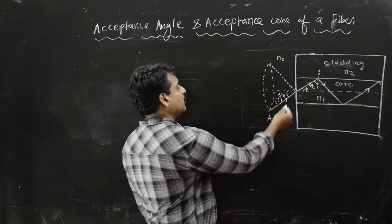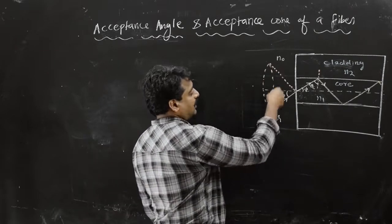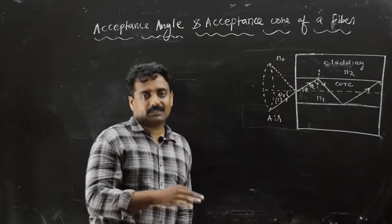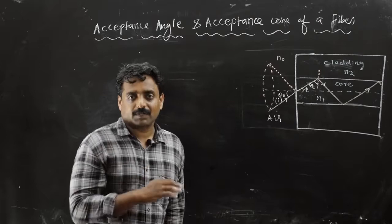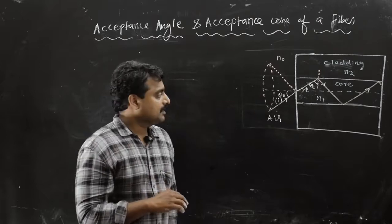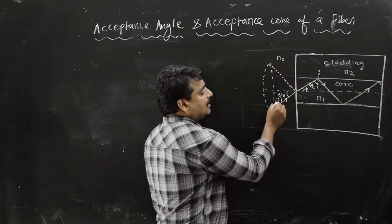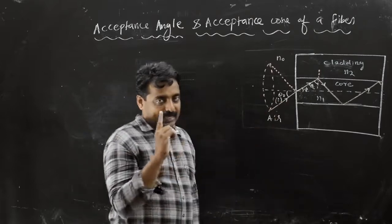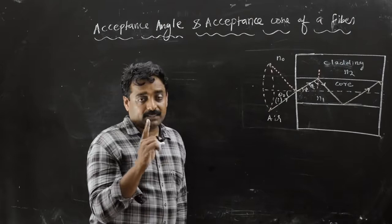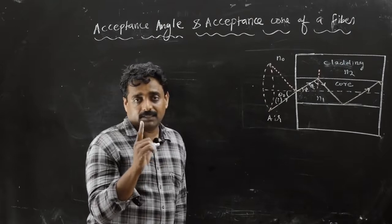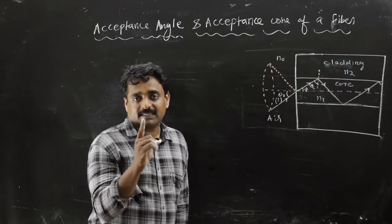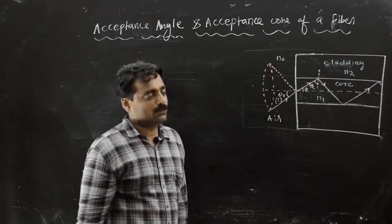That cone represented at the corner is known as the acceptance cone. This angle is known as the angle of incidence; otherwise it is known as the acceptance angle, theta 0.